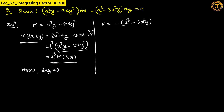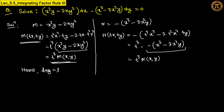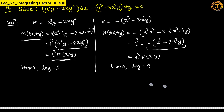For N: substitute tx and ty to get minus t³x³ minus 3t²x² times ty, giving t³ times (−x³ − 3x²y). So N(tx, ty) equals t³ times N(x, y), confirming N is also a homogeneous function of degree 3. Both M and N are homogeneous with the same degree, so we can apply Rule 3.